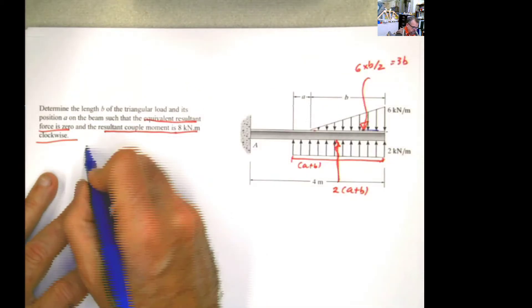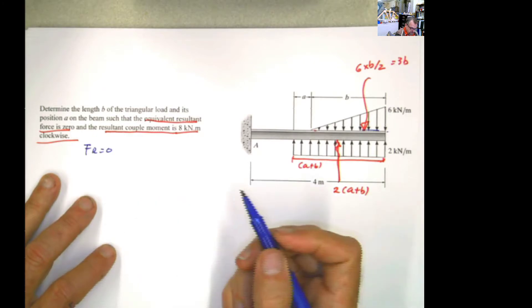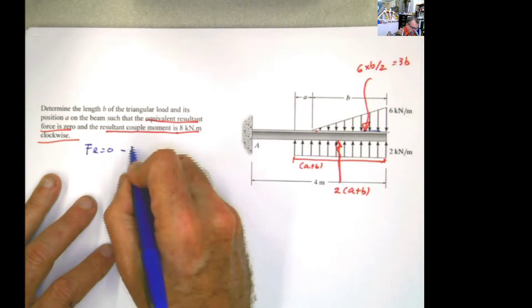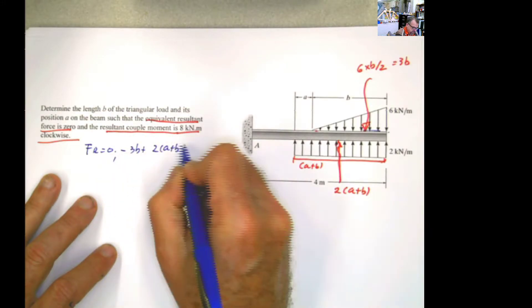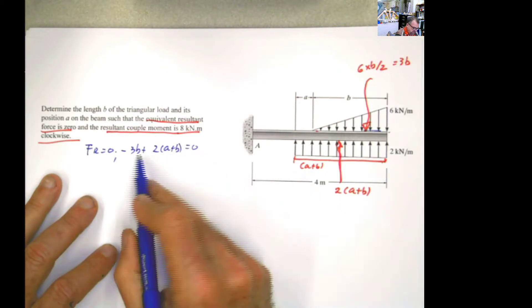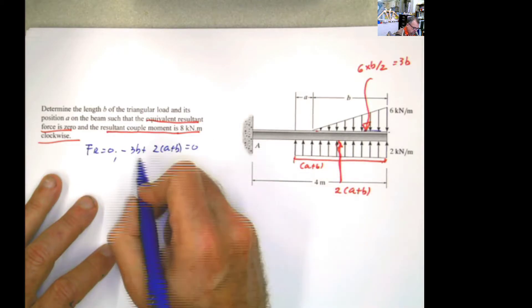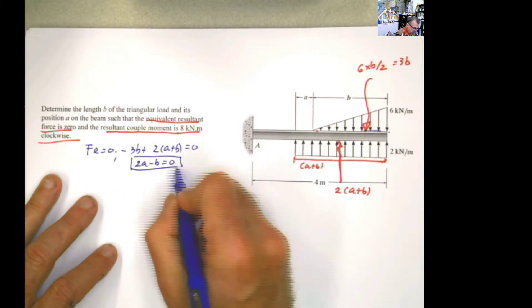So now those are the only two forces acting here. And we know the resultant force is 0. So if the resultant force is 0, then I have my first equation using the first constraint. Negative 3b plus 2 times (a plus b) has to be 0. And when I solve this, I have negative 3b plus 2b is negative 1b. So I have 2a minus b equals 0. And I call this equation 1.